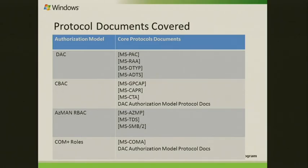The DTYP document is updated for the latest CBAC access check algorithm as well. With respect to CBAC, as mentioned earlier, CBAC extends the existing DAC model, but there are new protocols introduced to enable the CBAC infrastructure. There is a protocol called GPCAP — for example, if you have configured some policies on Active Directory, GPCAP is how those policies are pushed from the Group Policy server to the file server. As ELISA mentioned, you can set central access policies onto the file server, and this protocol enables pushing those policies onto the file server based on a time interval or on-demand.